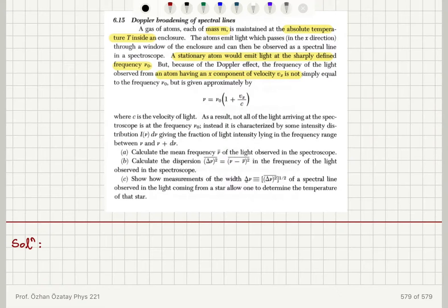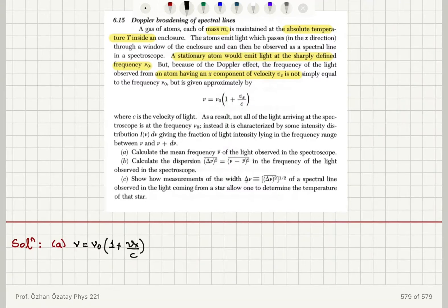Calculate the mean frequency of the light observed in the spectroscope. The frequency observed is given by ν = ν₀(1 + vx/c). To calculate the mean frequency, I take the mean value of this equation. This is going to be equal to ν₀ — because ν₀ is a constant it comes out — times (1 + the mean value of vx divided by c).